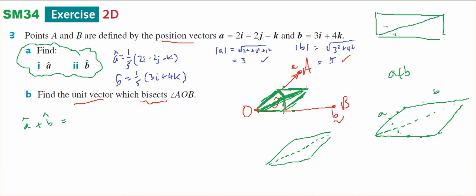So what have I got? I've got one third. So two on three I minus two on three J minus one on three K plus three on five I plus four on five K. I'm going to put all over 15 and bring the 15 out the front. So I need to multiply this by five. So 10I, minus 10J, minus five K. I need to multiply this by three plus nine I. Multiply by three plus 12 K is going to be one on 15.